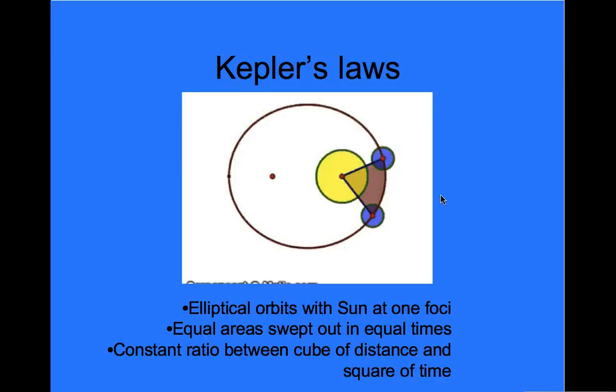And he came up with three laws. One was that planets were not going around in circles with little epicycles, but instead were going around the sun in elliptical orbit with the sun at one foci.